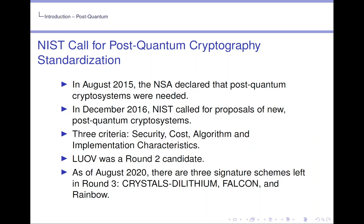Peter Schor's algorithm shows that the previous families are vulnerable to a sufficiently large quantum computer. So in August 2015 the NSA declared that post-quantum cryptosystems were needed. In December 2016 NIST called for proposals of new post-quantum cryptosystems with three criteria: security, cost, and algorithm implementation characteristics.